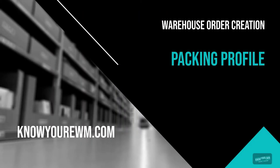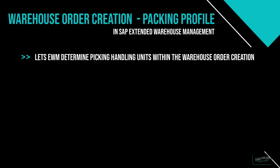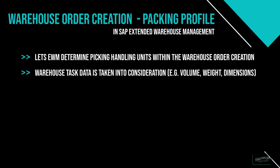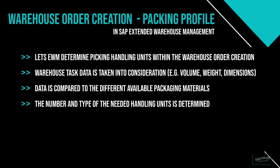Packing profile. With a packing profile, the EWM system can determine picking handling units within the warehouse order creation. The system will take the warehouse task data into consideration, like for example the weight, the volume, or the dimensions of the product we need to pick. This data is compared to the different available packaging materials and the number and type of the needed handling units is determined.